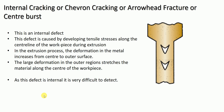Since this defect is internal, it is very difficult to detect. Internal cracking occurs inside the object, so it is almost impossible to detect with the naked eye. To detect this defect, NDT methods — non-destructive testing methods — are used. So friends, in this way we have seen the defects that occur in the extrusion process. Thank you.